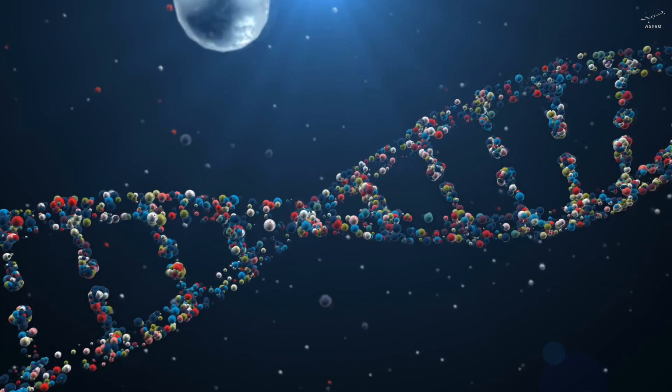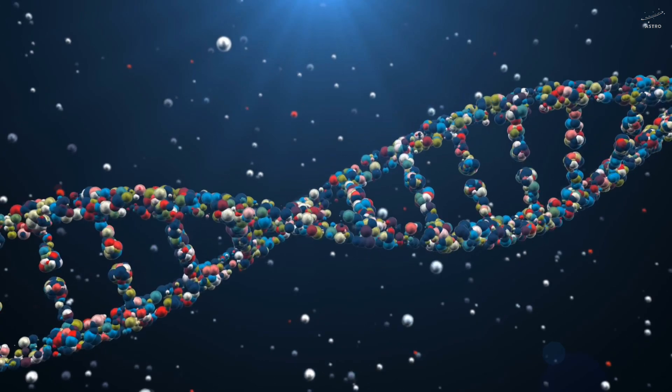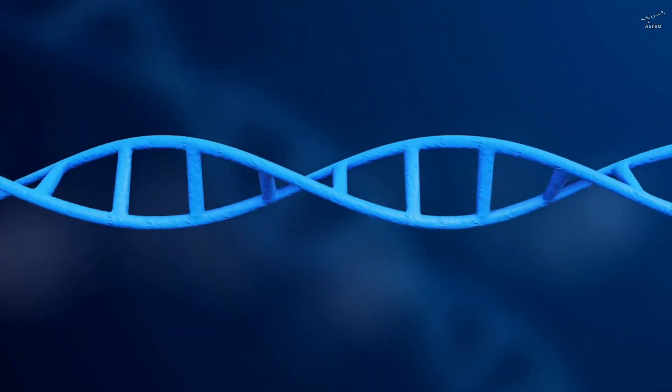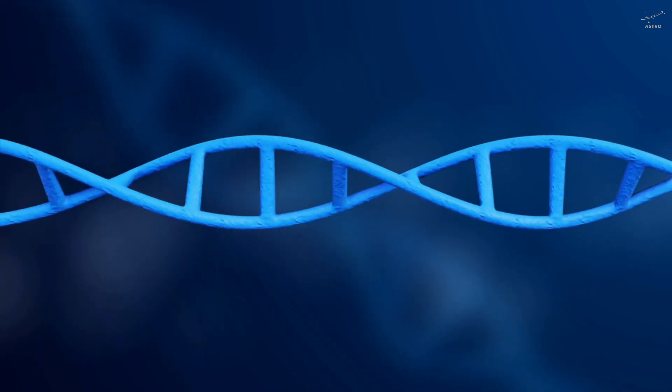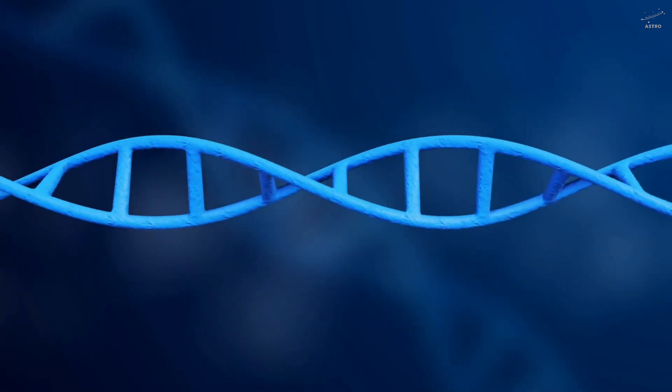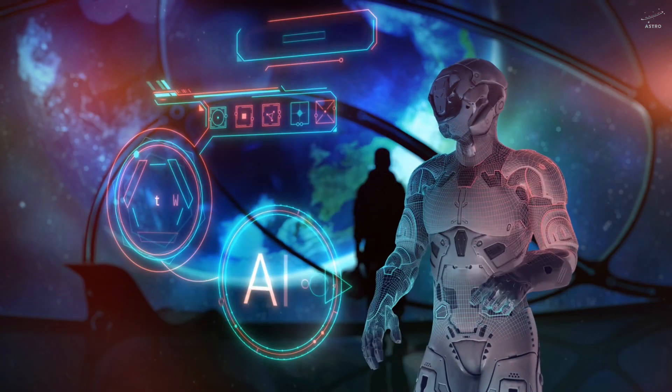And that's when a bold idea begins to take shape. What if we could model this protein well enough to engineer it into our cells? Some researchers now believe this isn't science fiction anymore. They've already inserted DSUP into human cells in the lab. The result? Less radiation damage. Stronger DNA under stress. But scaling this up to the entire human body? That's a different frontier.